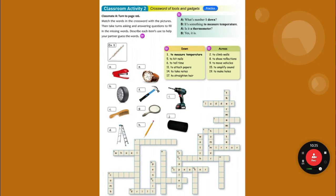Seven — to record dates — that's G, that's a calendar, C-A-L-E-N-D-A-R. Thirteen — to tie shoes — that is a shoelace, or string. Thirteen down is string, S-T-R-I-N-G.